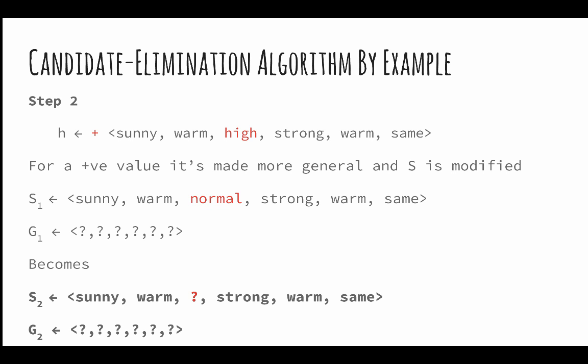For the second hypothesis which is positive, we notice the humidity attribute has changed to normal but the result is still true for the enjoy-sport function. Hence, the specific hypothesis is further generalized and we obtain the values for S2 and G2. Since no changes are done to the general hypothesis, we have G0 equal to G1 equal to G2 where the hypothesis S2 contains a change from S1. We carry the result over to the next step of the algorithm.